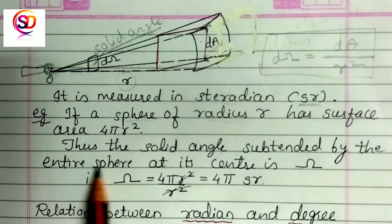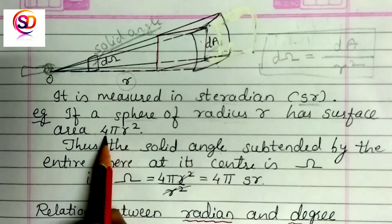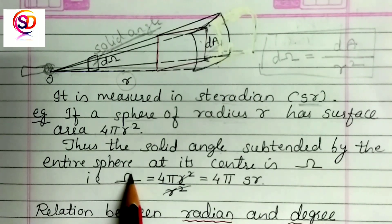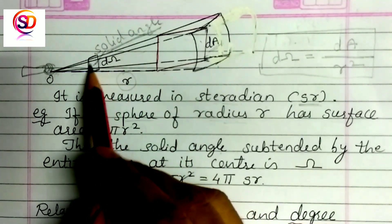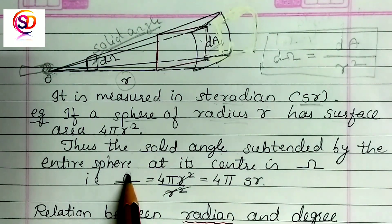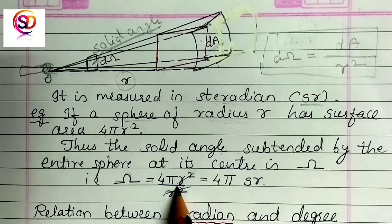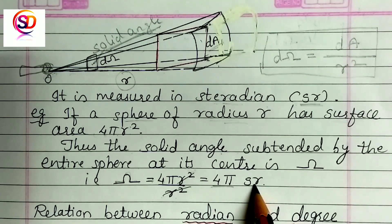The solid angle subtended by an entire sphere: the surface area of a sphere is 4 pi r squared, and dividing by r squared, the r squared cancels. So the whole solid angle of any sphere is 4 pi. It is measured in terms of steradian.